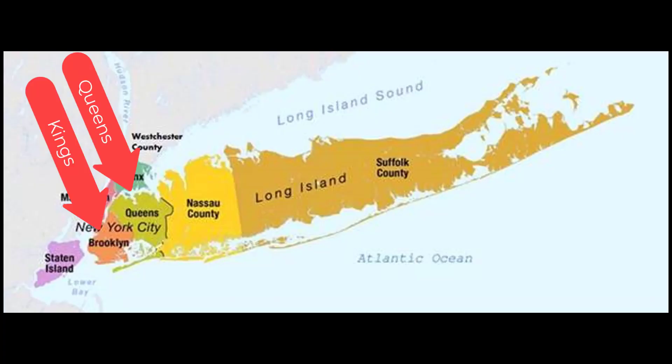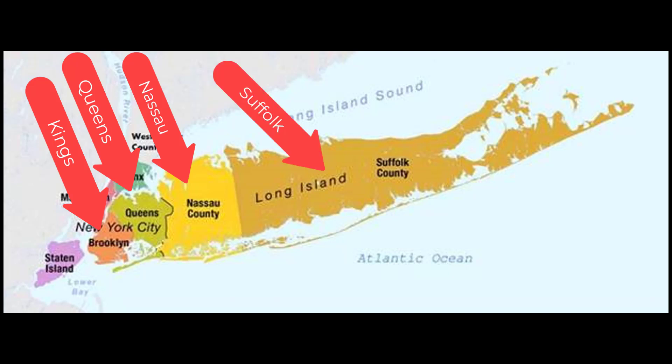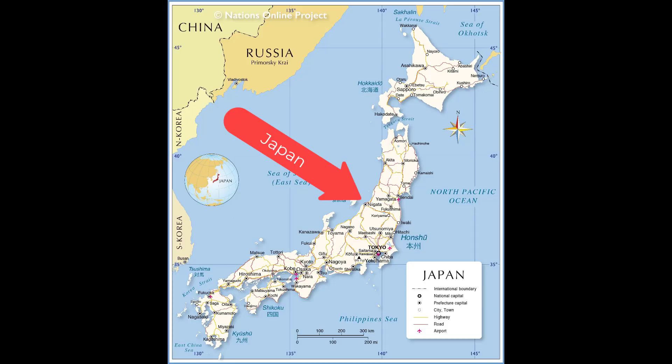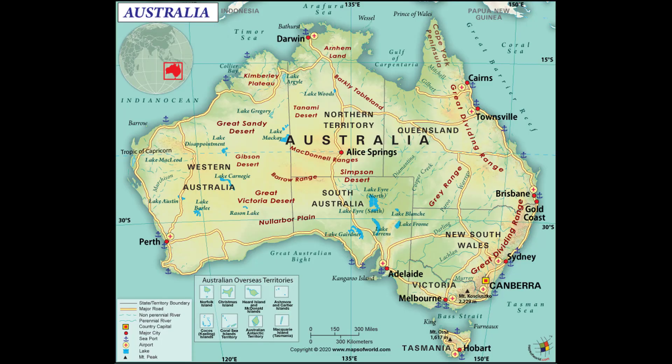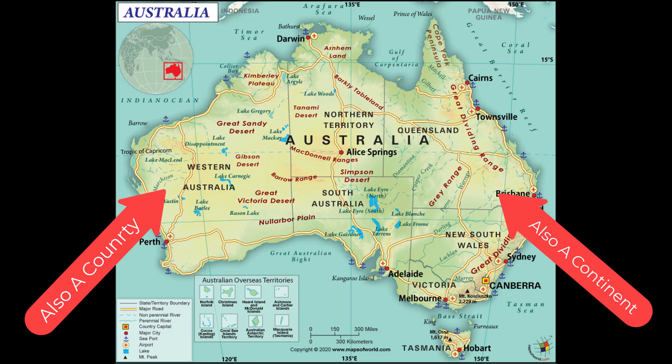Brooklyn, Queens, Nassau, and Suffolk counties make up one long island in New York. Japan is an island that is also a country, and Australia is an island that is referred to as a country and a continent.